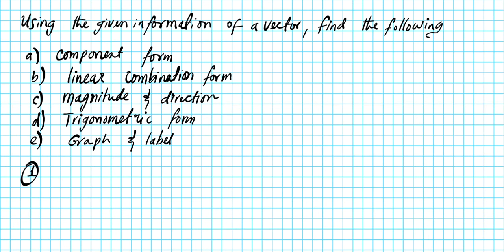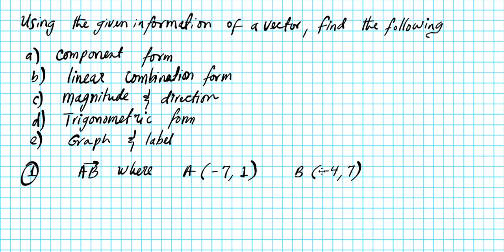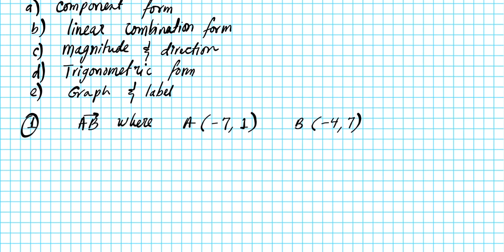For problem one, let's say you're given vector AB, where the initial point A has coordinates negative seven and one, and the terminal point B has coordinates negative four, comma seven. The arrow in the vector notation tells you that you're starting from A and heading in the direction of B — that's how you know your initial and terminal points.